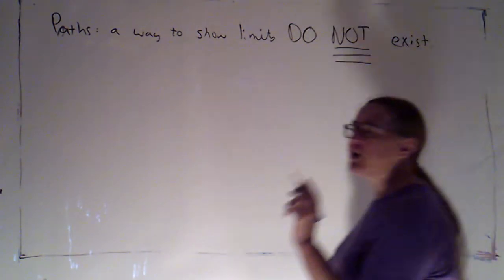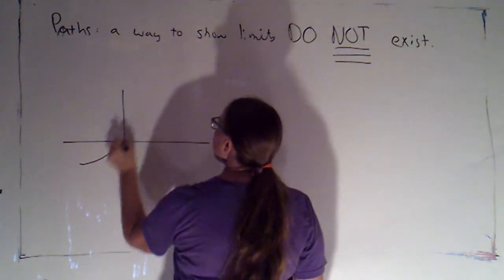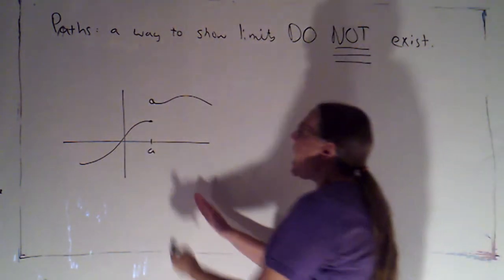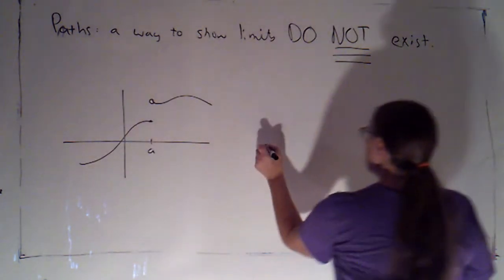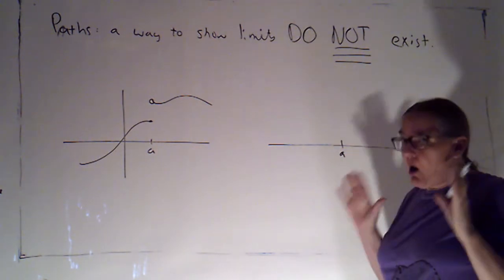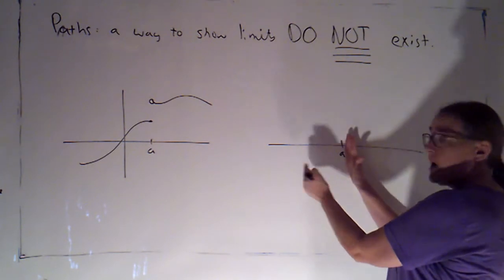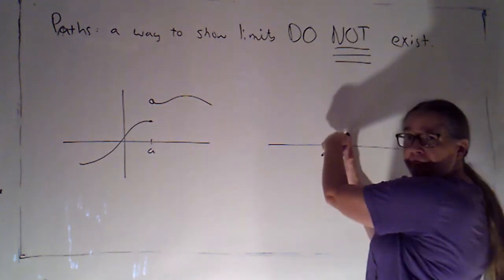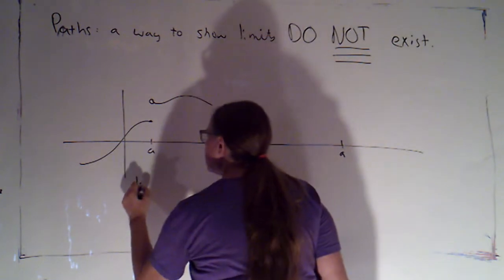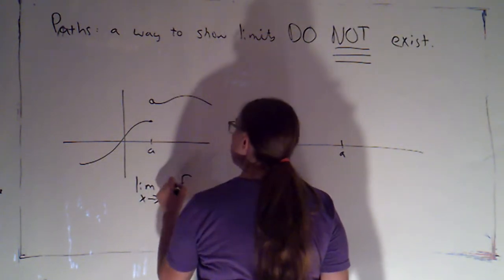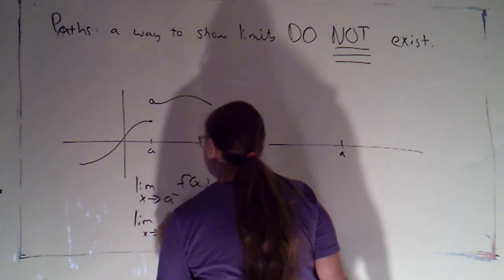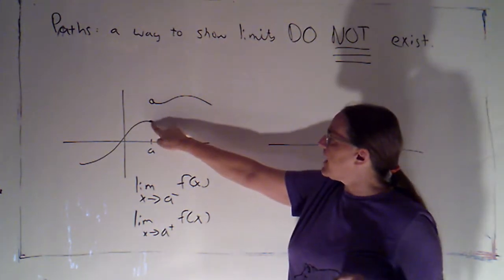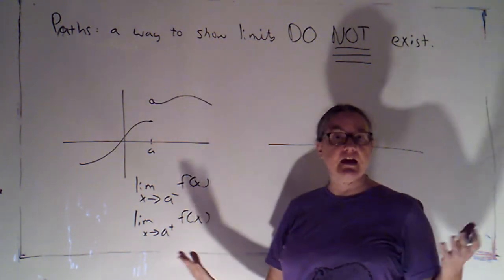For a function of one variable, let's say here's a point a and I've got a function — we're approaching a, our x values are approaching a, but that's on the number line. So there are only two directions that I can approach a from: I can come in from the left, I can come in from the right. I cannot approach a from above because that's not a point on the number line. So I can look at these one-sided limits: the limit as x approaches a from the left of f(x), and the limit as x approaches a from the right of f(x). In a situation like this, the limit from the left would be different from the limit from the right, and we would say that the limit does not exist.